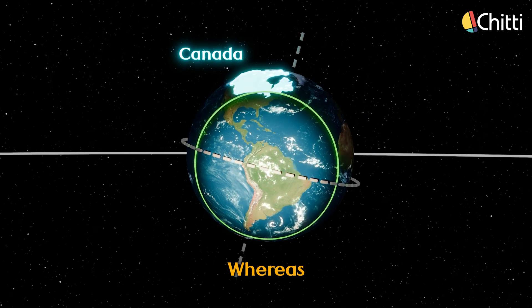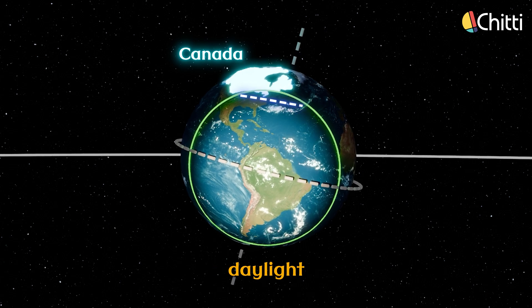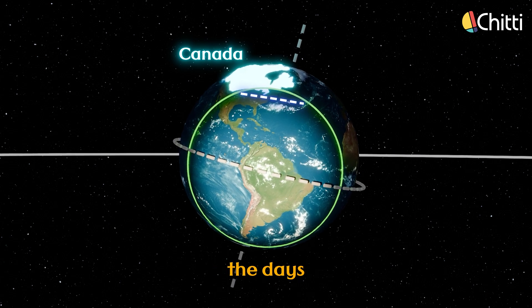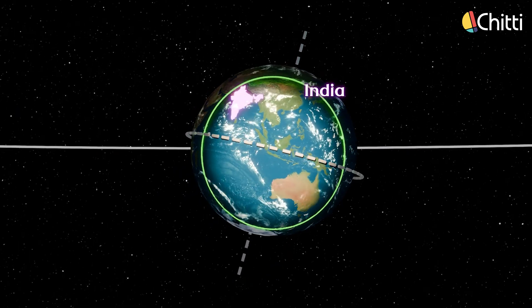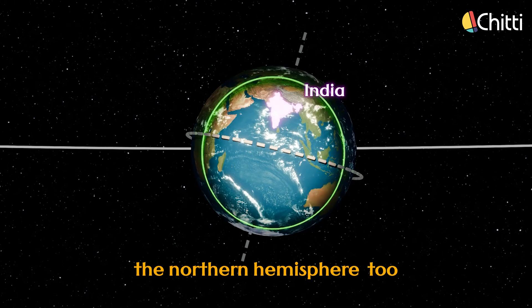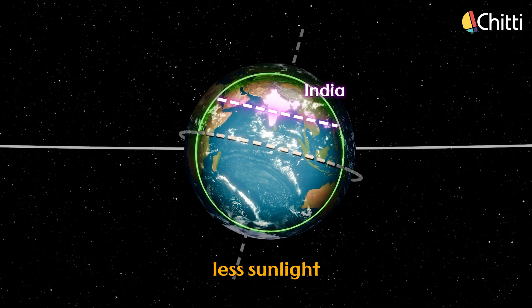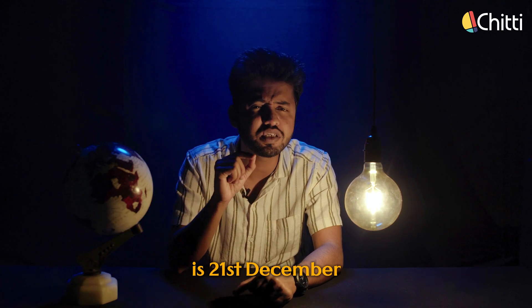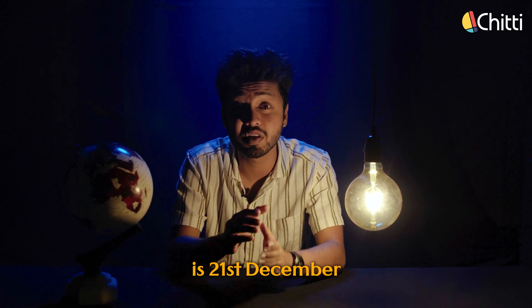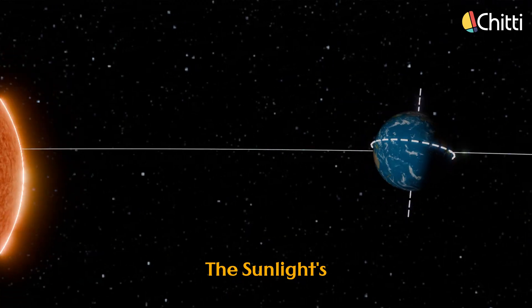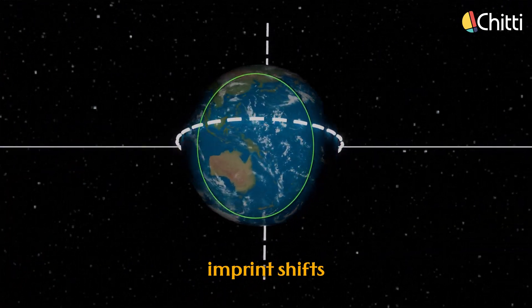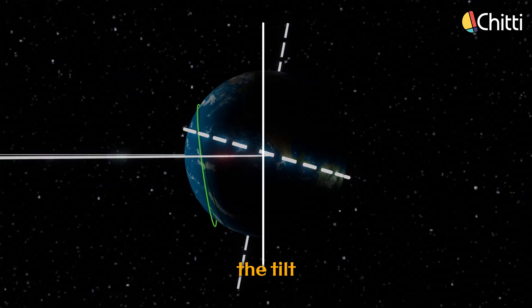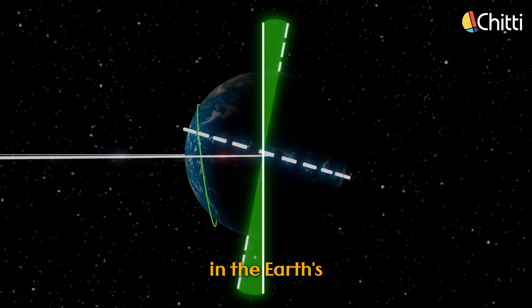Whereas Canada in the North receives very little daylight, making days shorter. And India, being in the Northern Hemisphere too, will receive less sunlight, making days shorter there as well. If you are wondering how exactly December 21st is the shortest day in the Northern Hemisphere — it comes down to the sunlight's imprint shifting throughout the year because of the tilt in the Earth's axis.